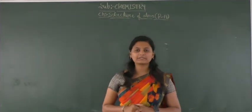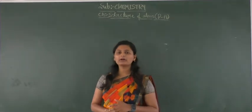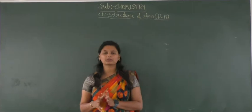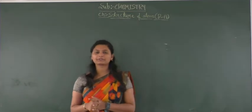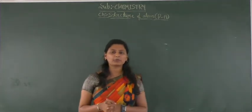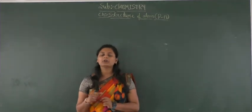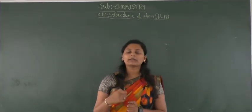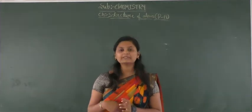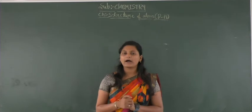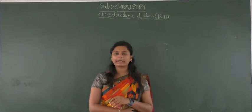Good morning dear students, welcome to chemistry class. In the previous class, we discussed about the quantum mechanical model of an atom, including the Schrödinger wave equation and the function of psi — the wave function. Psi square represents the probability density or probability amplitude, giving us the intensity of an electron in an atom at any point, allowing us to measure the probability of finding an electron. We also discussed the features of quantum mechanical models.